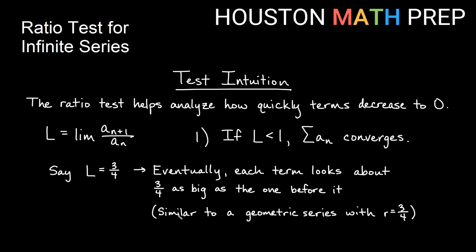At that point, the series takes on the quality of a geometric series where any term is about 3/4 as much as the previous one. Since we know a geometric series with a positive ratio less than 1 converges, that's the idea behind L being less than 1 meaning our series converges.